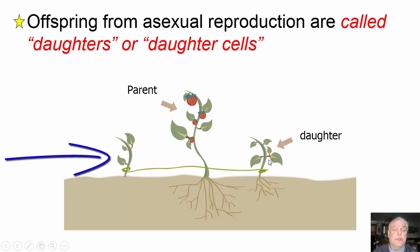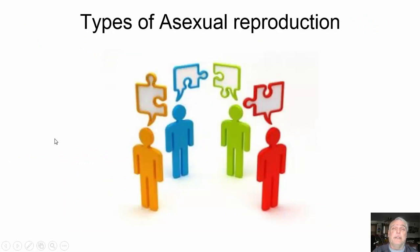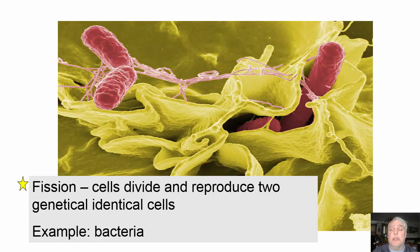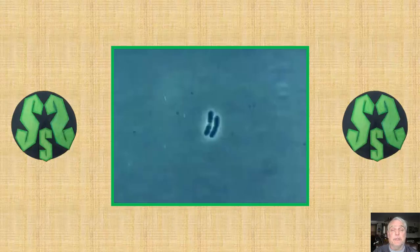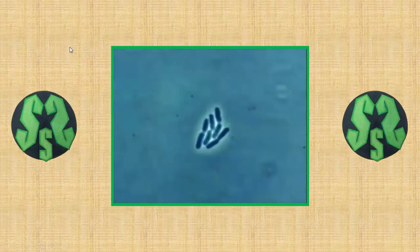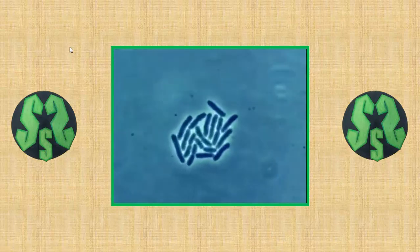This parent plant and its offspring are genetically identical. Offspring from asexual reproduction are called daughter cells. There are several different types of asexual reproduction that can occur in organisms. The first one we'll look at is fission — this is when cells divide and reproduce, producing two identical cells. Bacteria is a really good example of this. Fission allows very rapid growth of population size.